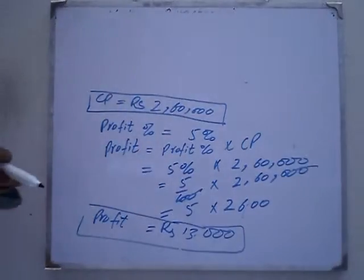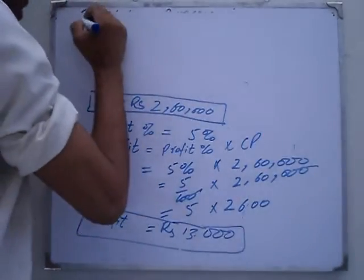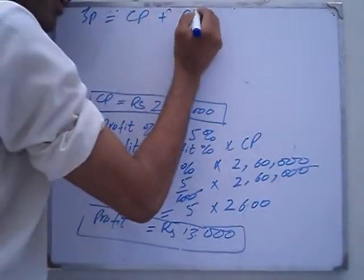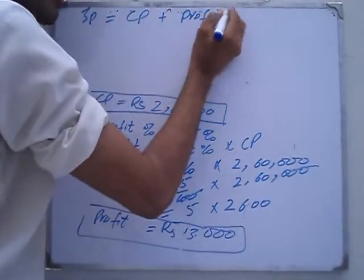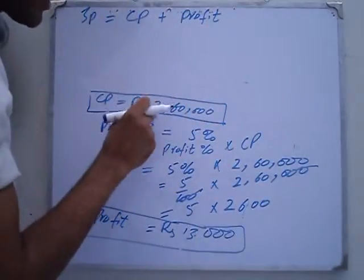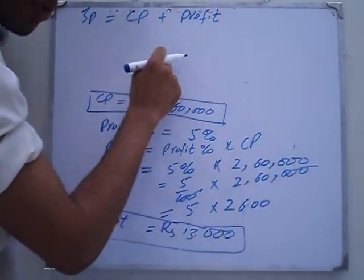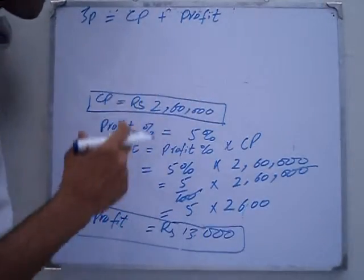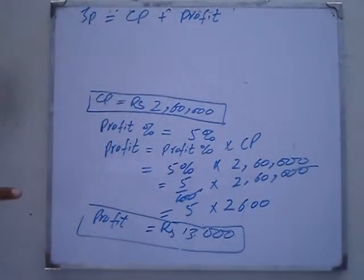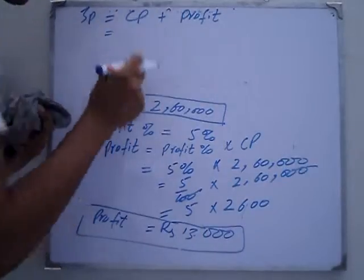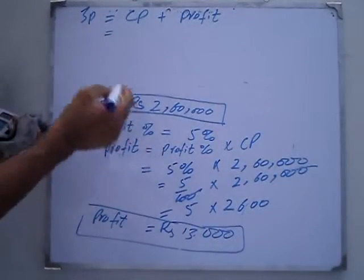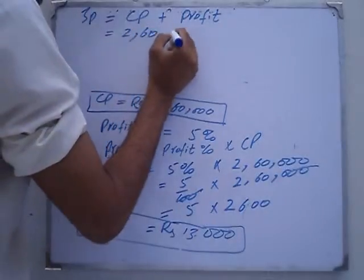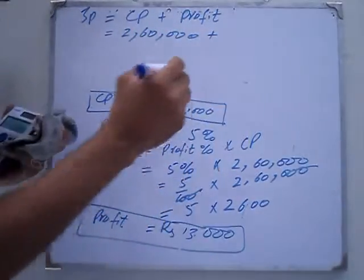Selling price equals cost price plus profit, which is formula number one. The cost price is what we calculated - the purchase price plus the denting painting cost. Now we add the profit. Cost price is 2,60,000 plus the profit.